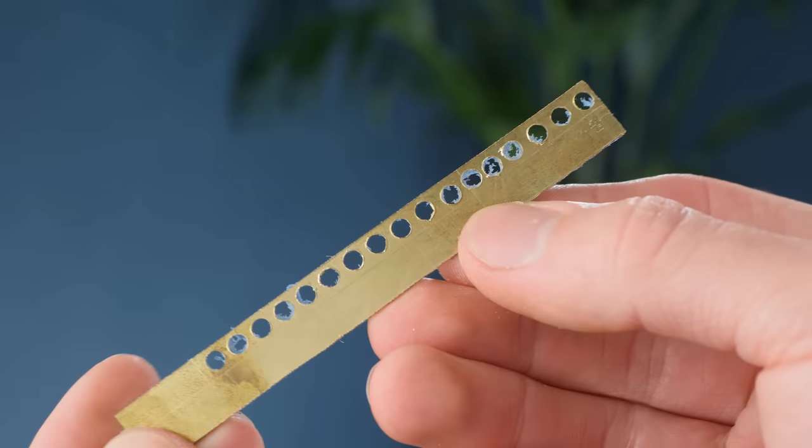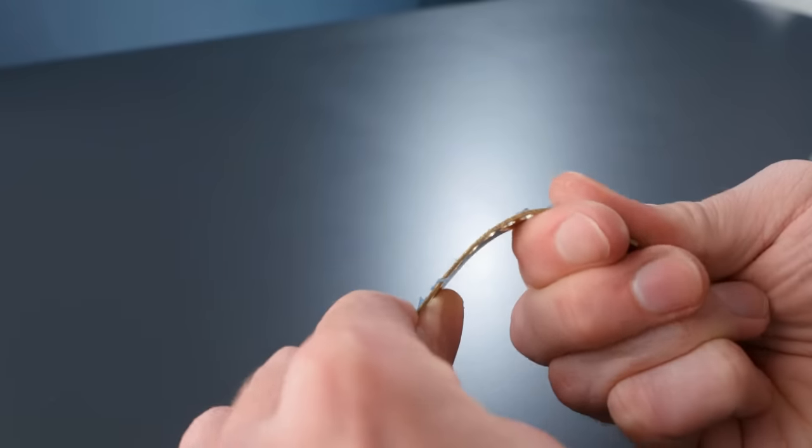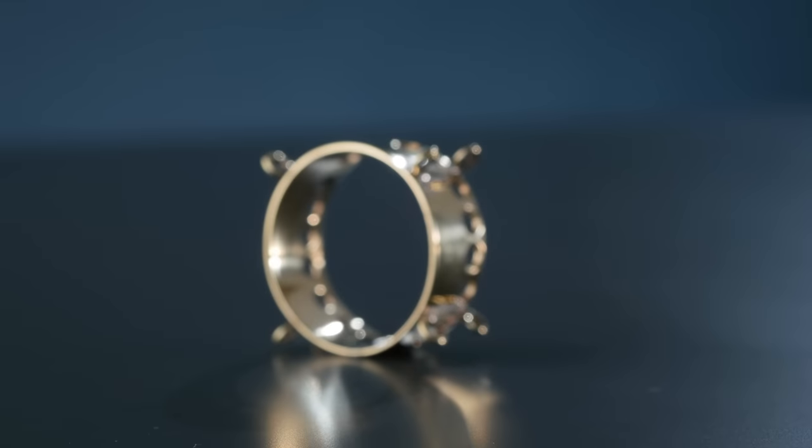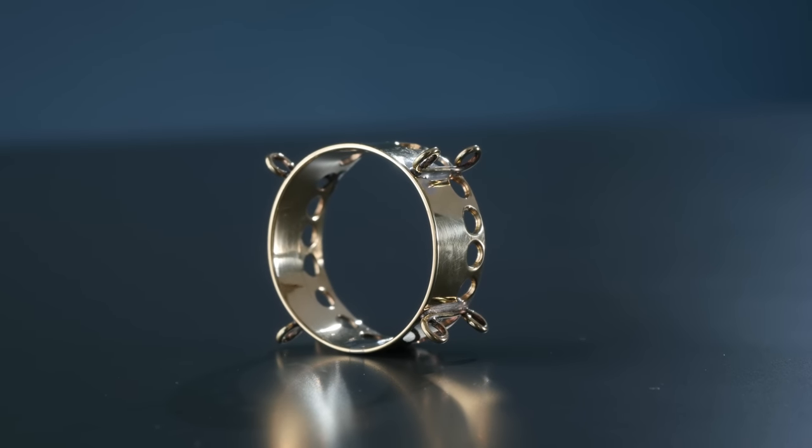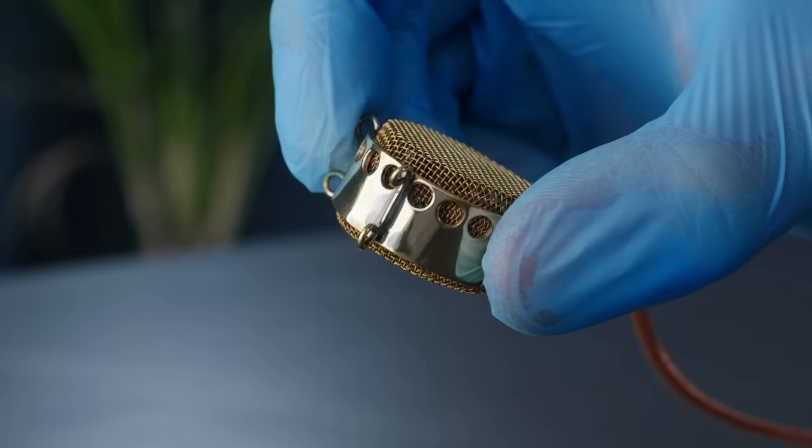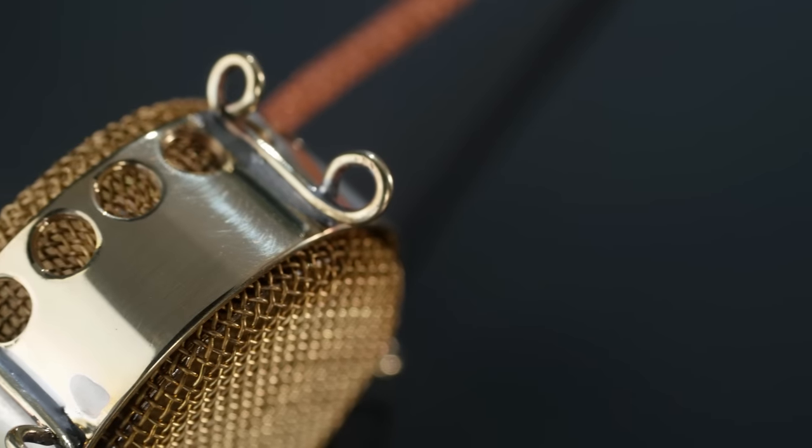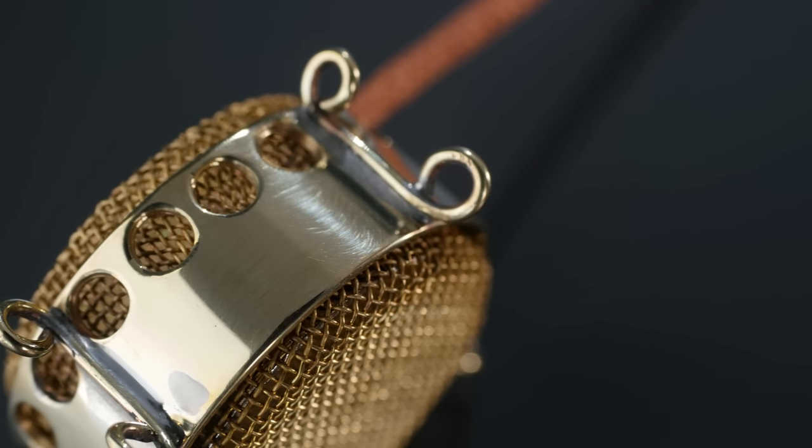Thankfully, remedying this is fairly straightforward, as drilling plenty of holes along one edge of the initial brass strip, as well as making it as shallow as possible, allows the sound to enter in at the rear unimpeded, so it leaves intact the capsule's directional pick-up ability, and in my opinion it looks even cooler in appearance thanks to all of these holes.